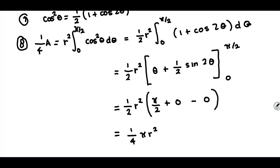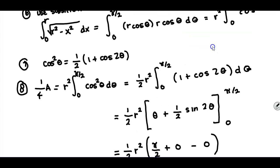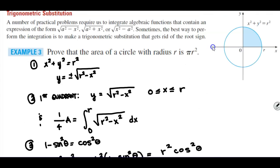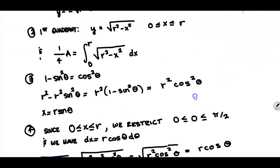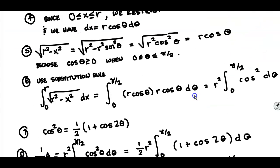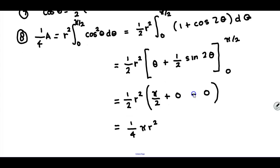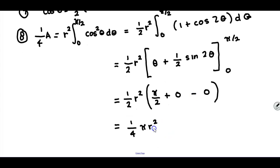So what we've done is proved a quarter of that circle, which means if you multiply the entire thing by 4, you would have the area of the full circle — πr².